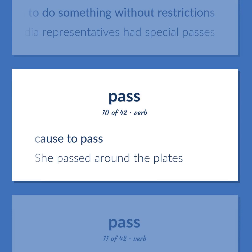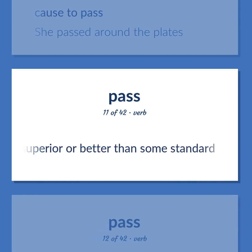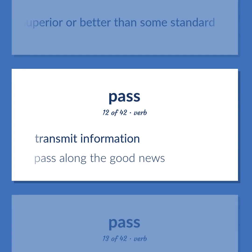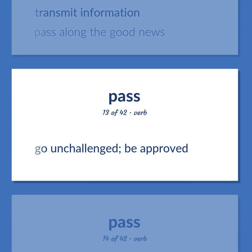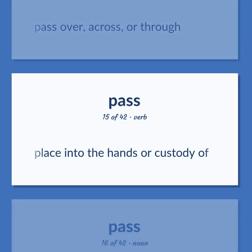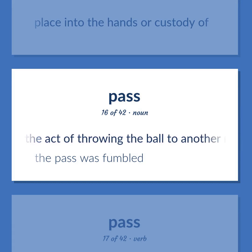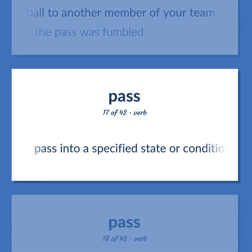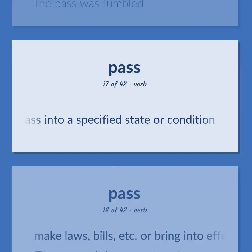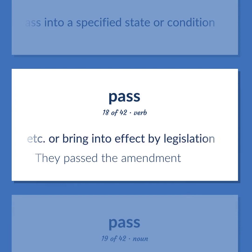Cause to pass. She passed around the plates. Be superior or better than some standard. Transmit information. Pass along the good news. Go unchallenged — be approved. Pass over, across, or through. Place into the hands or custody of. Sports: the act of throwing the ball to another member of your team. The pass was fumbled. Pass into a specified state or condition. Make laws, bills, etc., or bring into effect by legislation. They passed the amendment.